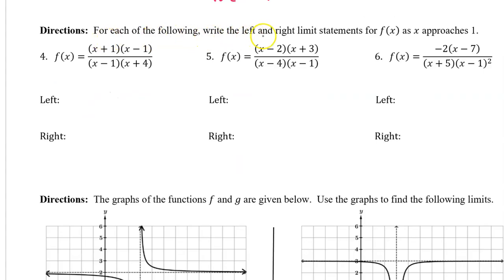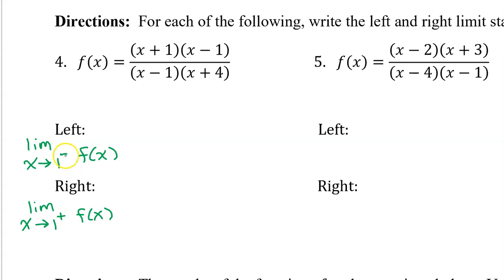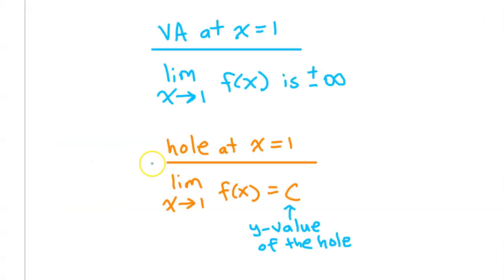For each of the following, write the left and right limit statements for f of x as x approaches 1. With a negative superscript, this means the limit as x approaches 1 from the left of f of x. With a positive superscript, this means the limit as x approaches 1 from the right. The value of the left and right limit will depend on whether we have a vertical asymptote or a hole at x equals 1. If it's a vertical asymptote, the limit will be positive or negative infinity. If it's a hole, the limit will equal a constant — the y value of the hole.